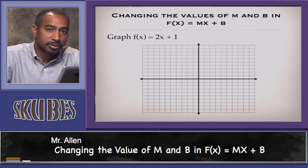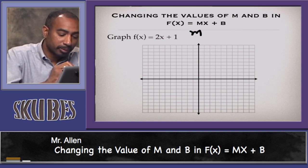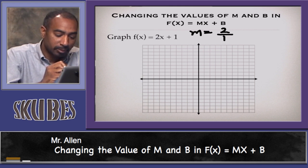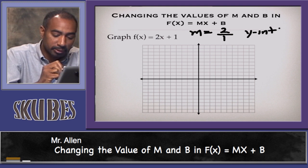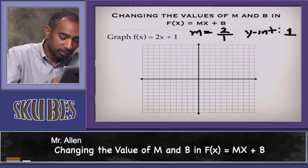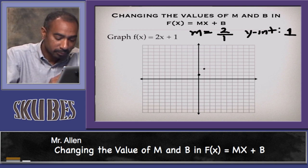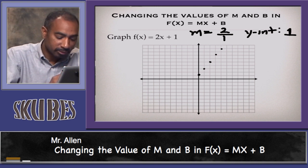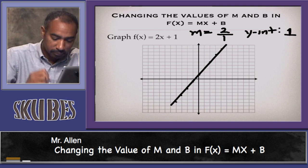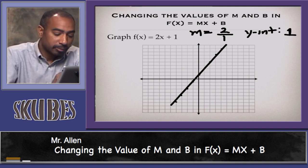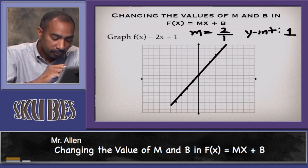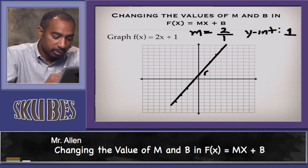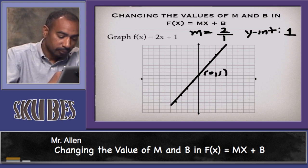Let's look at the function f(x) = 2x + 1. We know from the formula that the slope is 2, or 2 over 1, and the y-intercept is 1. So our starting point is going to be 1. I can count over 1 and up 2, keep going in that direction, or go to the left 1 and down 2 to make this line. Notice this line is going uphill from left to right, and it crosses through the point (0, 1).